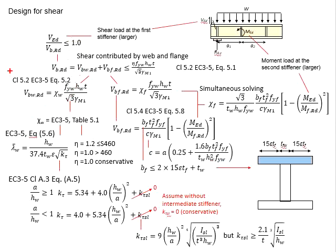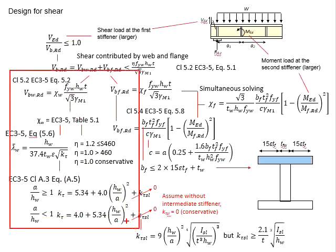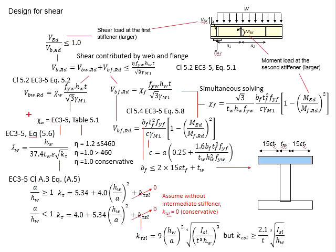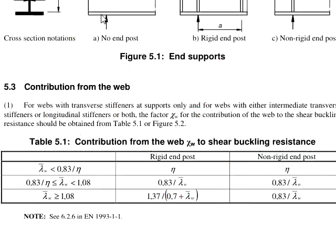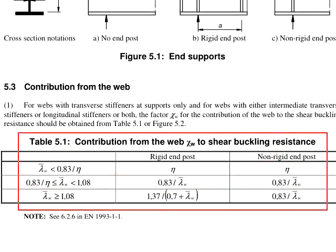Let us start with the web part first. First, we need to determine the ratio chi_w. Refer to EC3-5, Table 5.1. The table 5.1 is given here.